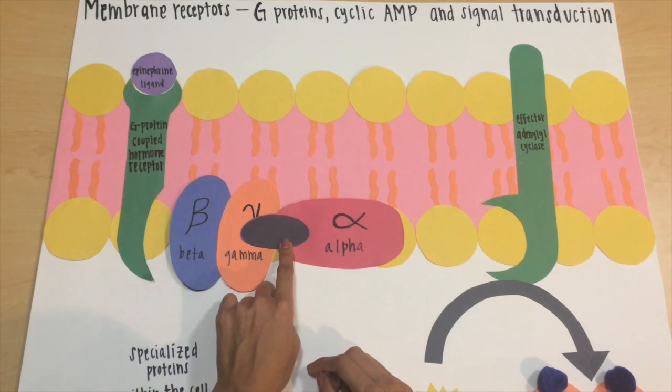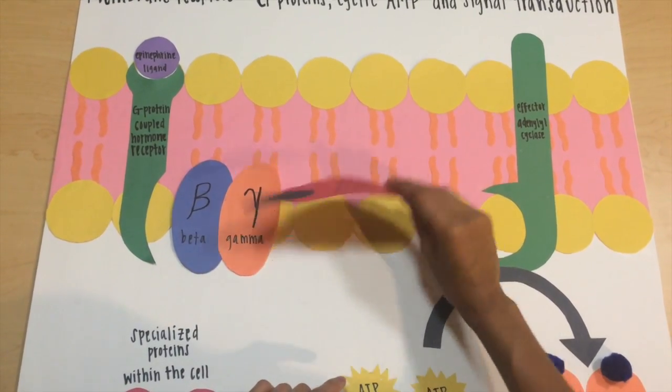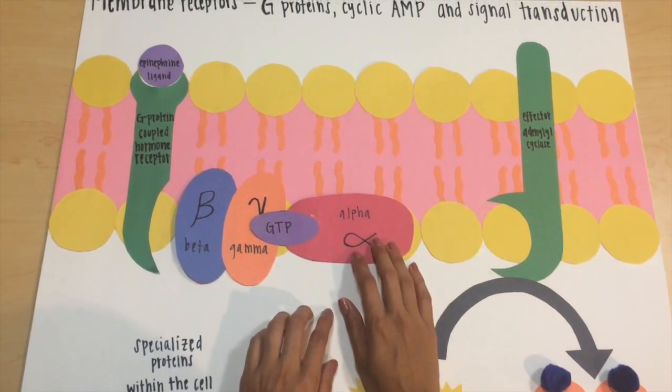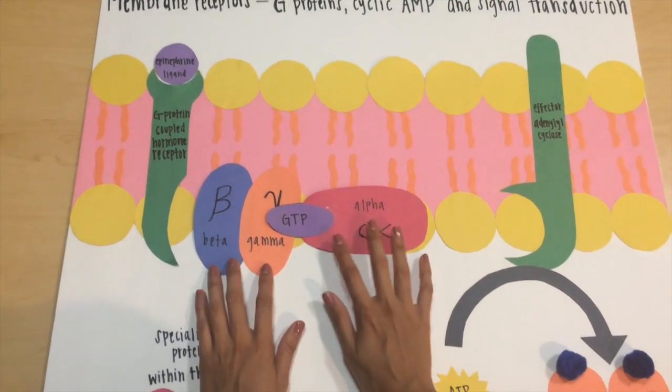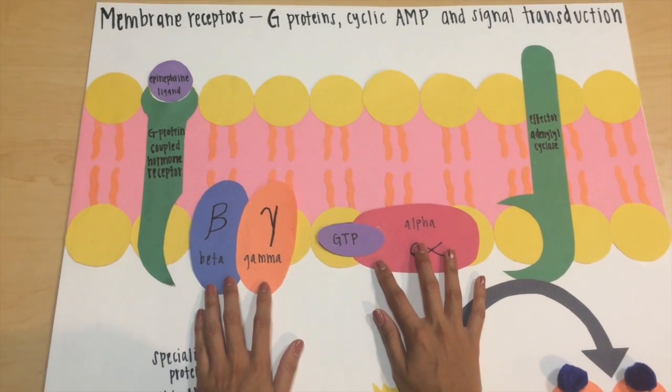Guanosine diphosphate GDP is exchanged for guanosine triphosphate GTP, which then activates the alpha subunit. Once activated, the alpha subunit dissociates from the other two subunits of the G-protein.